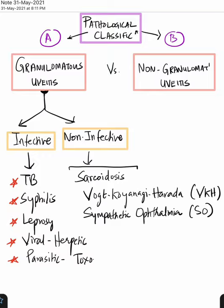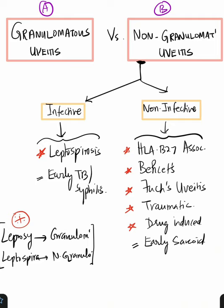Moving on to non-granulomatous uveitis, again you can classify into infective or non-infective. The infective cause is leptospirosis — don't forget this. Note that leprosy causes granulomatous uveitis, whereas leptospirosis causes non-granulomatous uveitis.